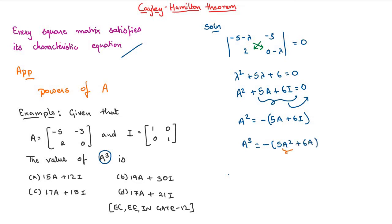Now, here we know the value of A square. So, replacing it with this term, we get A cube is equal to minus 5 into minus 5A plus 6I minus 6A.